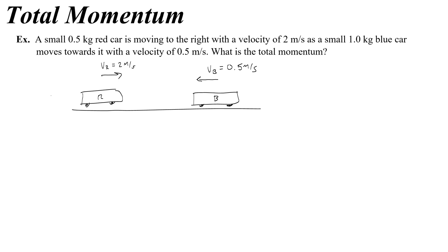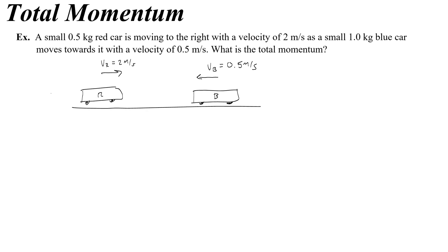Before we talk about conservation of momentum, let's talk about total momentum. Here we have a 0.5 kilogram red car moving to the right with a velocity of 2 meters per second, as a 1 kilogram blue car moves toward it with a velocity of 0.5 meters per second. To find the total momentum, you need to look at the mass and velocity of both objects.